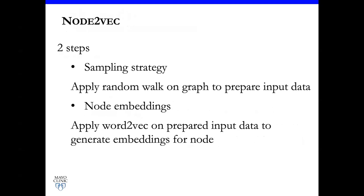Let me briefly dive into Node2Vec and explain how it works. Basically, there are two steps involved in Node2Vec. The first step is called sampling strategy. The Node2Vec model applies random walk on the graph to prepare input data. The next step is called node embedding generation. They use word2vec and throw the prepared sample data into this word2vec model and generate the corresponding embedding.